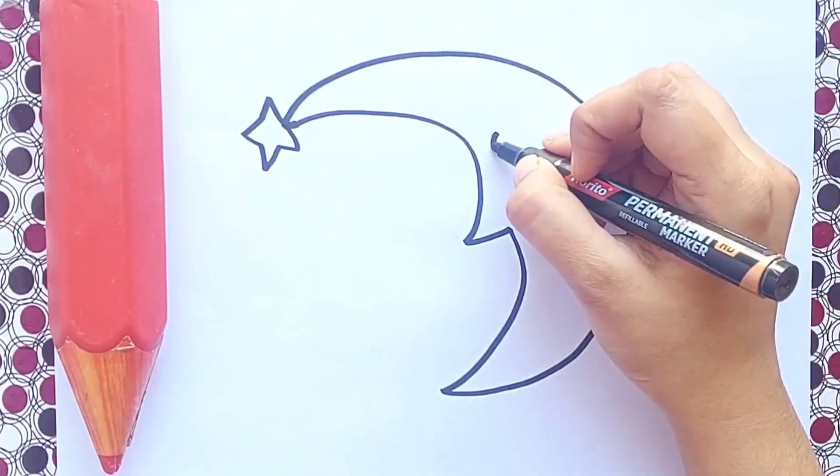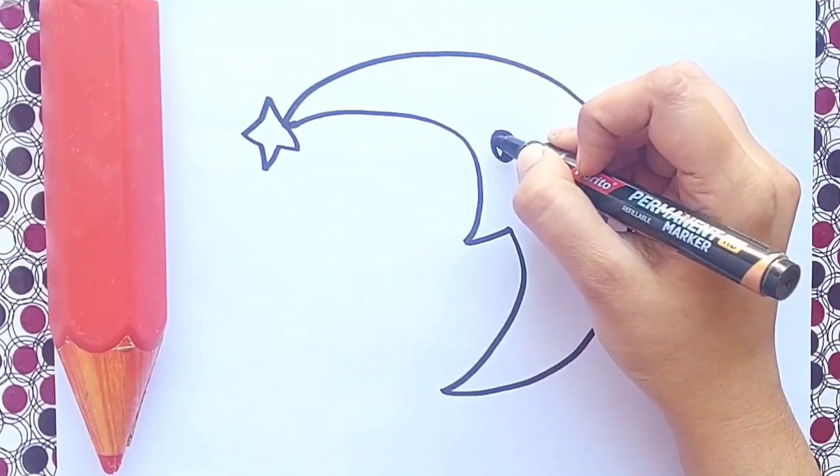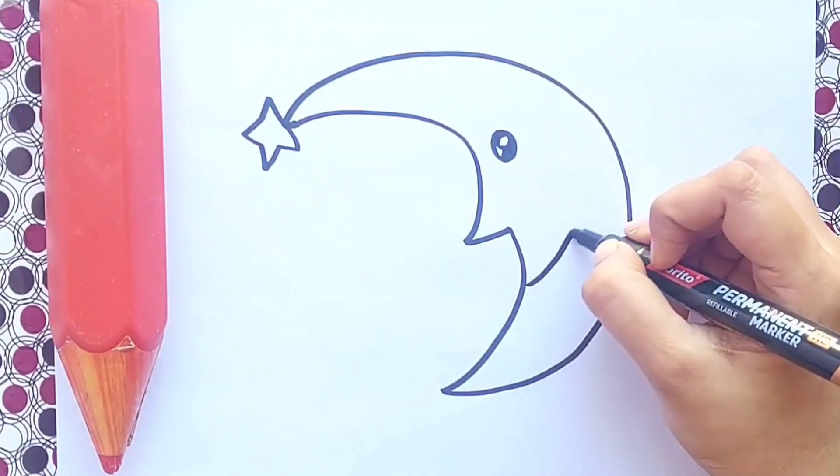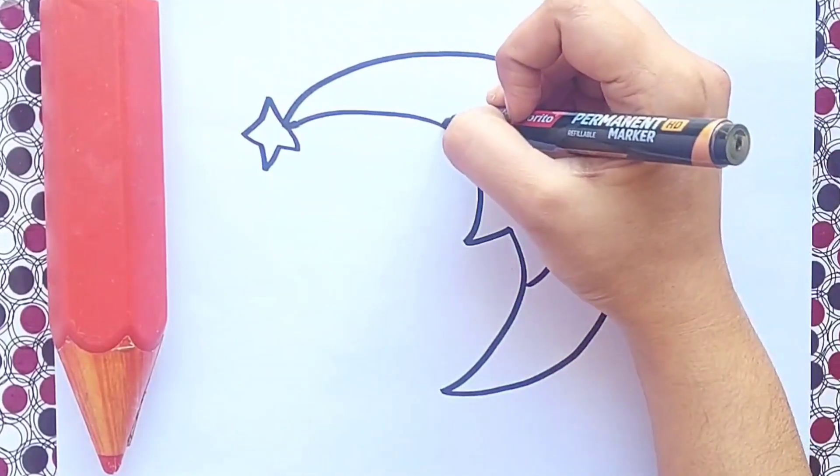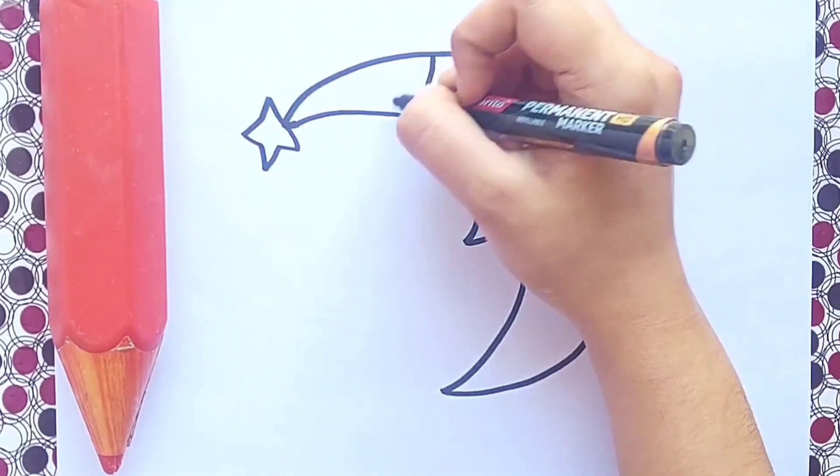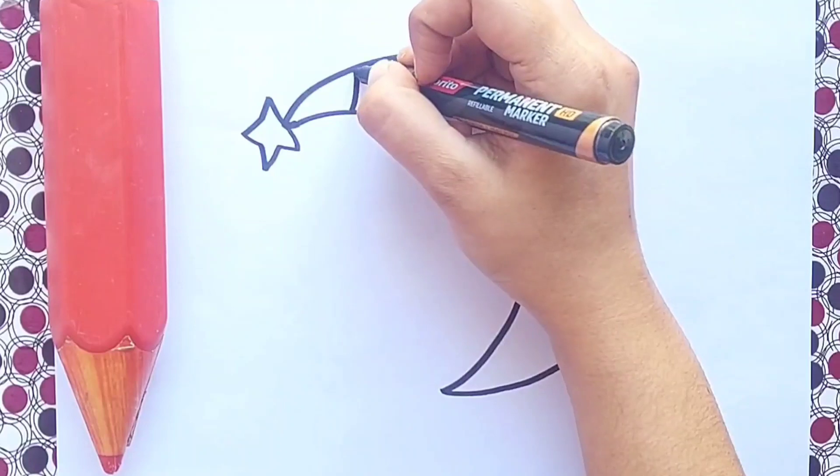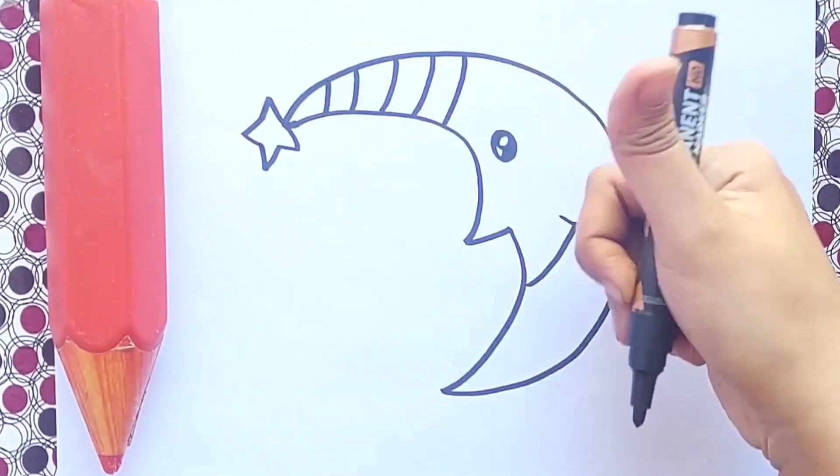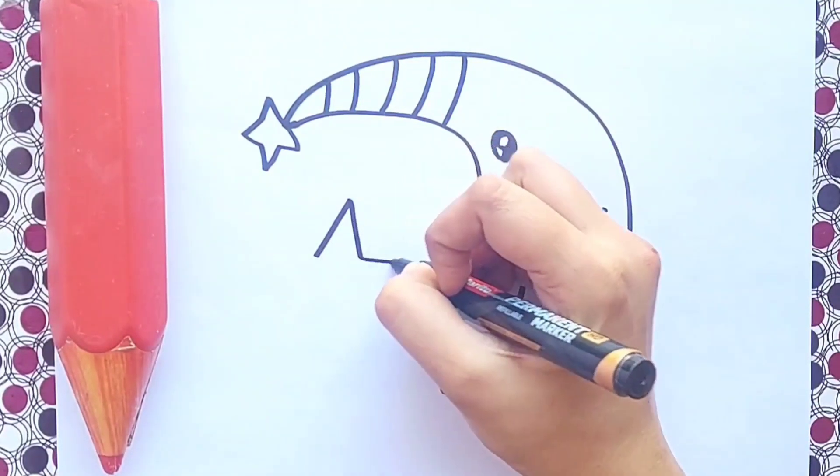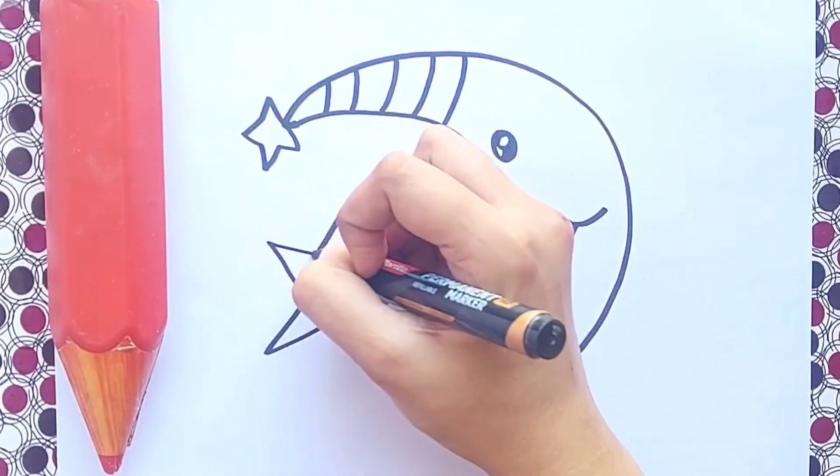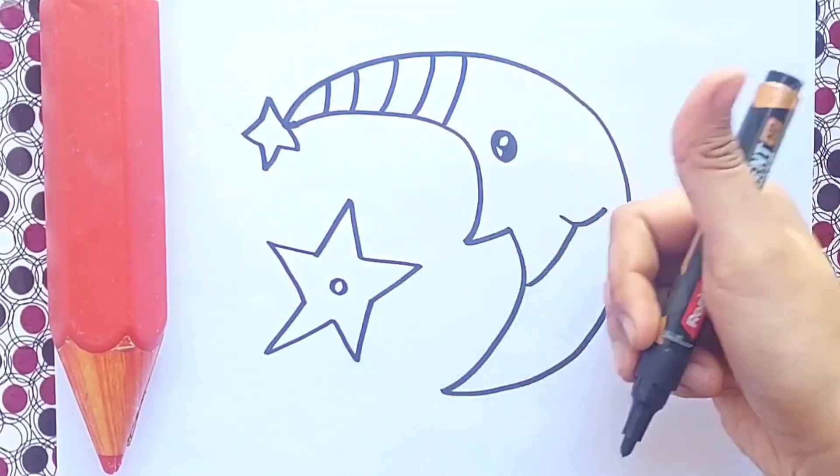Now I'm going to draw one cute eye. Great! And a smiley face. It's time to draw our moon's cap. Perfect! Now I'm going to draw a star. Great, our star is ready.